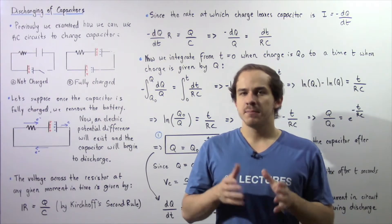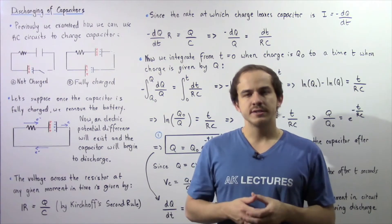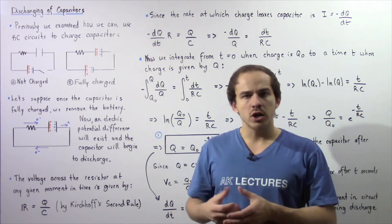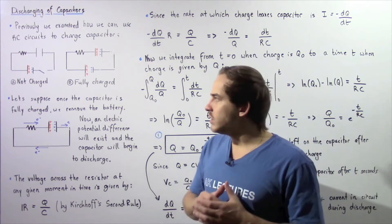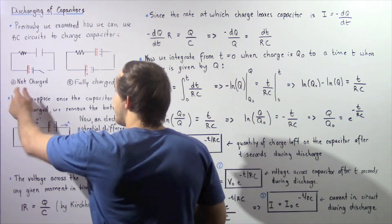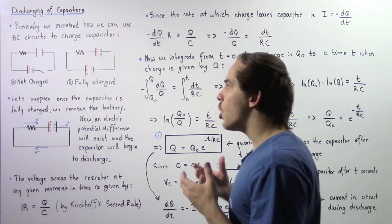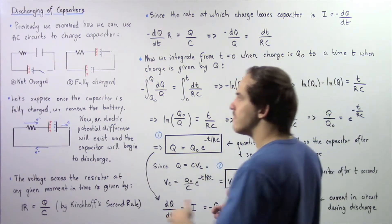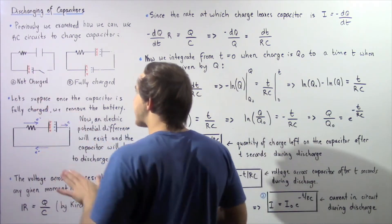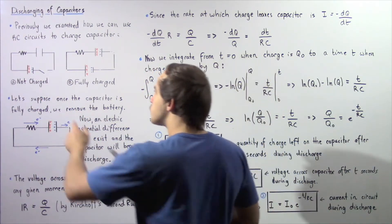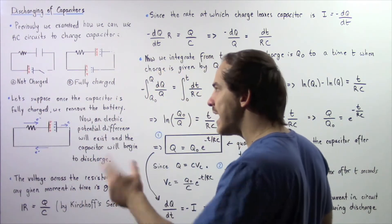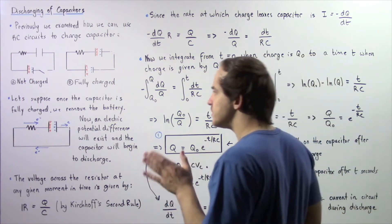As of now, in our discussion on capacitors and RC circuits, we essentially saw that we can use an RC circuit to charge a capacitor. So let's see exactly what we mean by looking at the following two diagrams. In diagram A, we essentially have an open RC electric circuit — a resistor, a capacitor, and a battery which is our voltage source. Notice our circuit is open, so our capacitor will not be charged because electrons will not flow inside an open circuit.